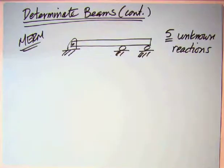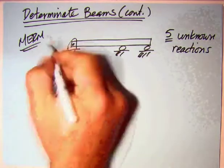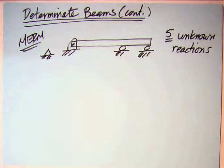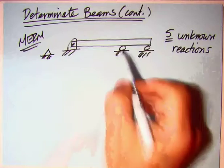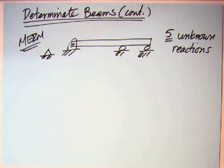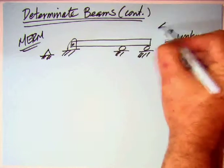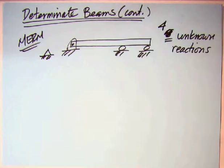Let's look at some other beams that the MERM has. The first additional beam that is still statically indeterminate in the MERM is one in which he's drawn a pin using the more complex symbol, and then a roller and another roller. So there's four unknown reactions for that beam. So again, still statically indeterminate.